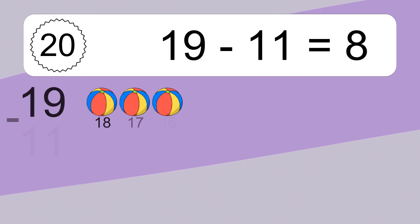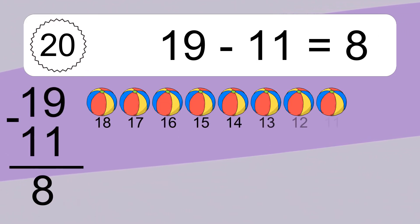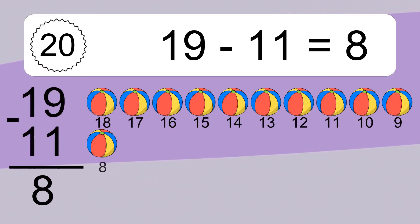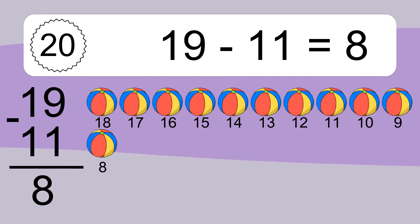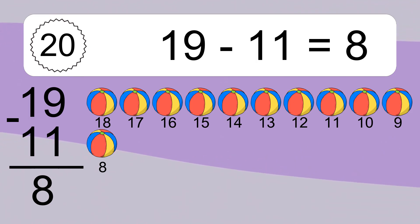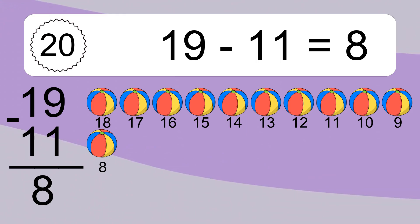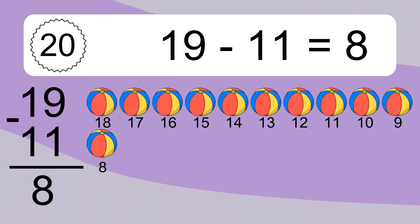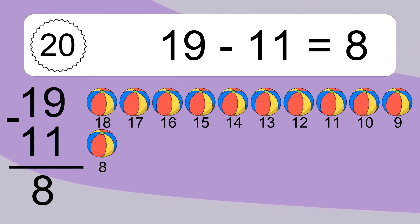19 minus 11 equals 8. Let's count it. 18, 17, 16, 15, 14, 13, 12, 11, 10, 9, 8.